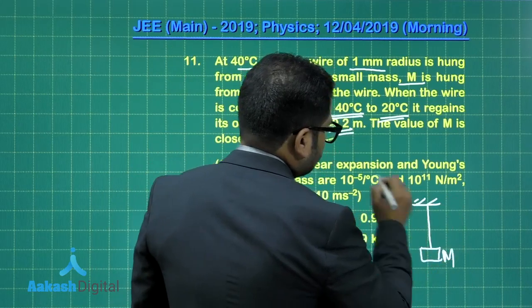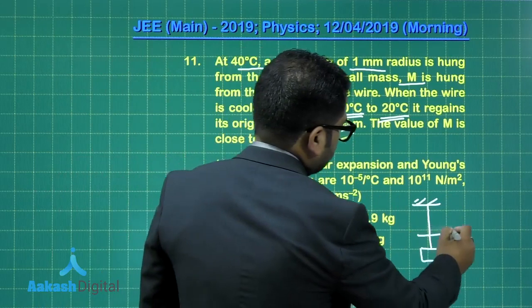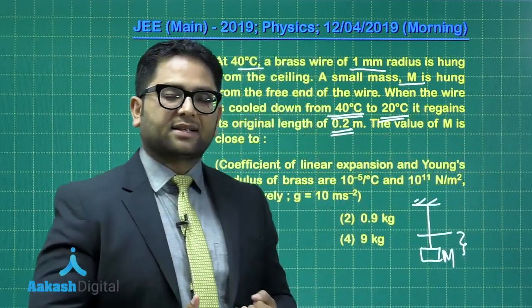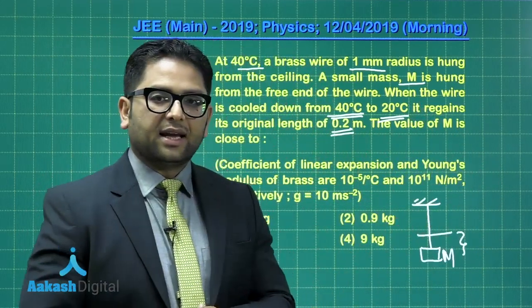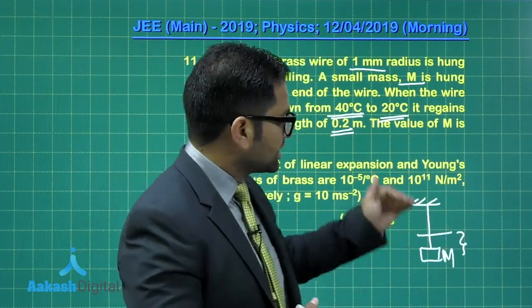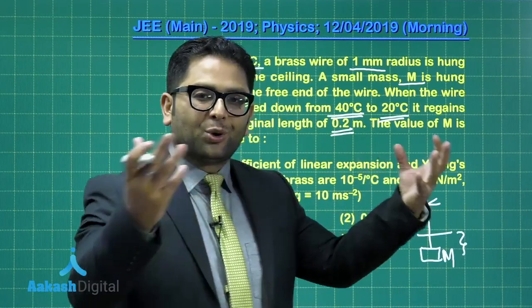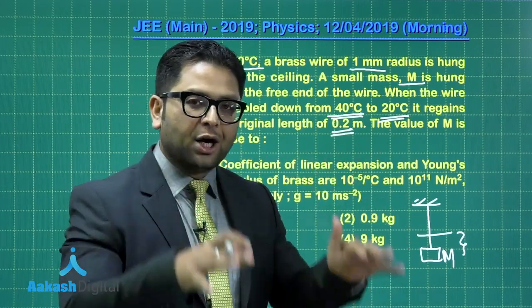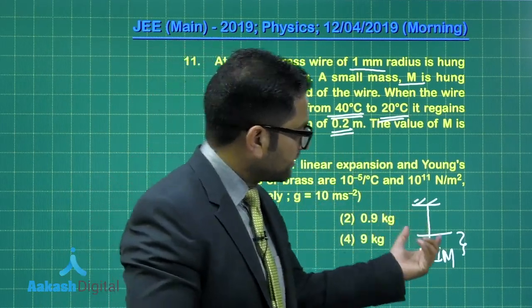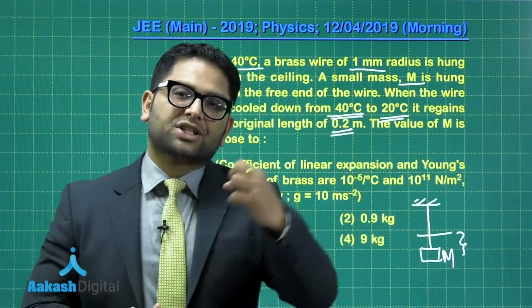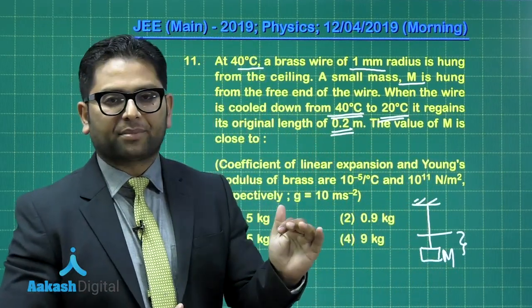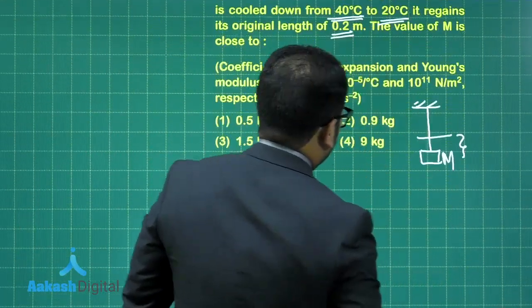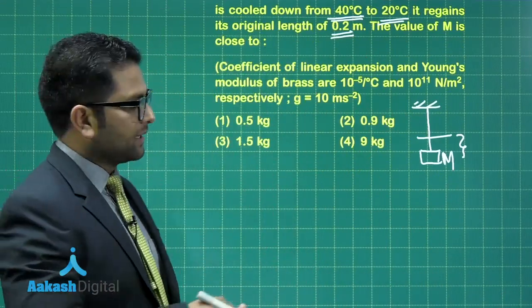We need to calculate the value of M on a very close scale. This capital M gives a certain value of elongation - that's the property when you put stress that will create an elongation. Now, in order to recover the original length, either you remove the load. But here, what has been done is the temperature of the system has been lowered. So the elongation generated by this is equal to the contraction created by the drop in temperature.